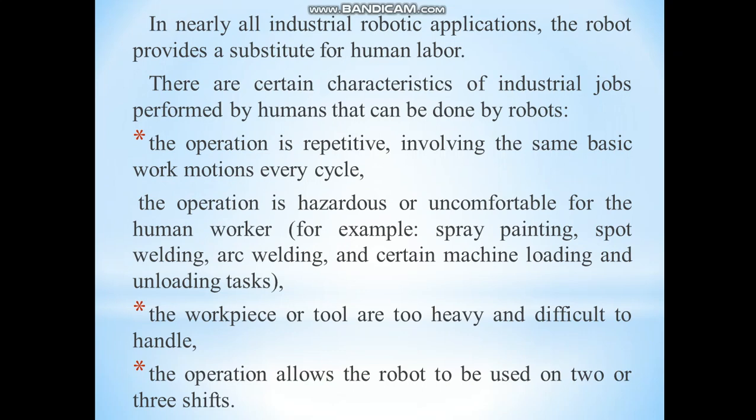In industrial robotic applications, the robot provides a substitute for human labor. There are certain characteristics of industrial jobs performed by humans that can be done by robots. The operation is repetitive, involving the same basic work motions every cycle. The operation may be hazardous or uncomfortable for the human worker — for example, spray painting, spot welding, arc welding, or certain machine loading and unloading tasks. The operation also allows the robot to be used on two or three shifts.